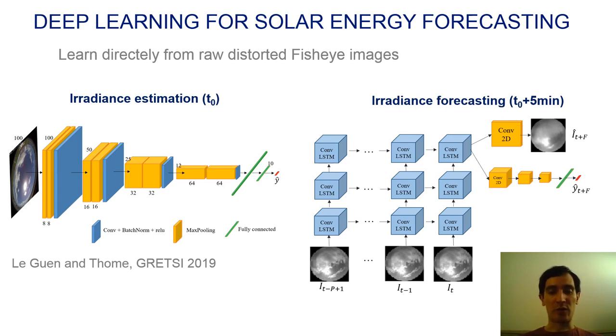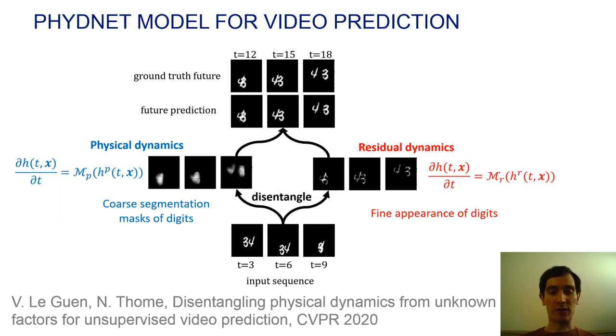In this work, we incorporate prior physical knowledge on the cloud motion to regularize deep neural networks. Our model for solar energy forecasting is based on a deep video prediction model that incorporates physical knowledge. We presented this PhyDNet model at the CVPR conference. The main idea is to leverage physical dynamics with learned partial differential equations.